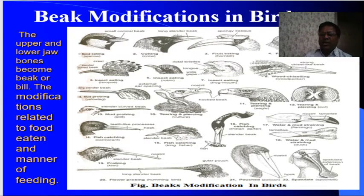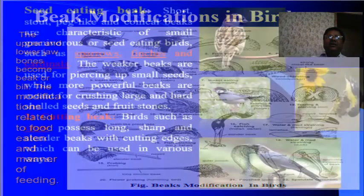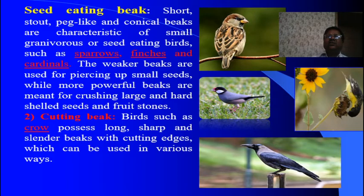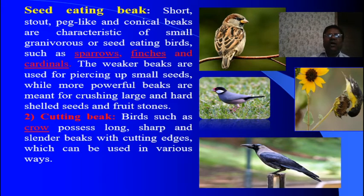There are different types of beaks in birds. The first is the seed-eating beak. It is a very common type of beak modification. Examples are sparrows, finches and cardinals. This type of beak is short, stout, pig-like and conical. It is observed in granivorous or seed-eating birds. Weaker beaks are used for piercing small seeds, while more powerful beaks are meant for crushing large and hard-shelled seeds and fruit stones.